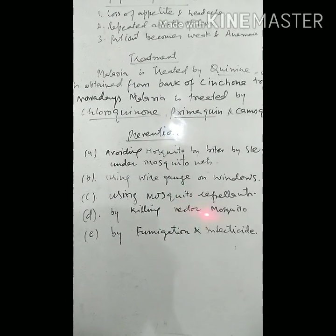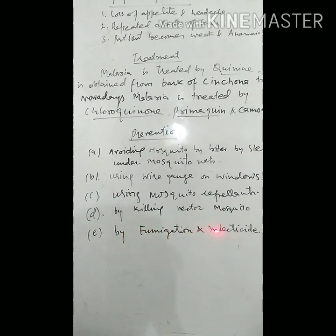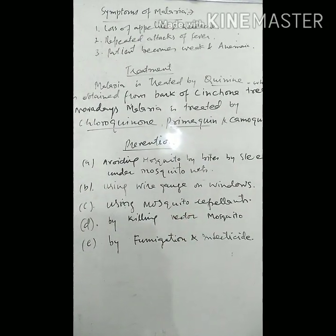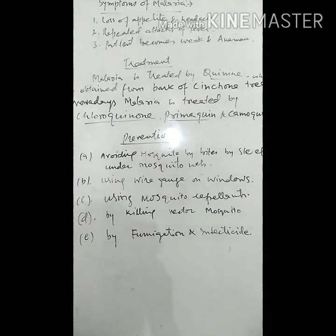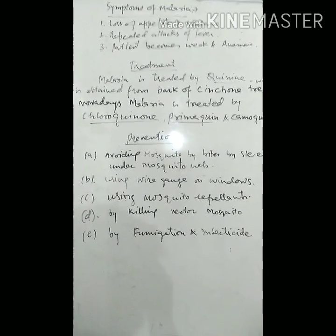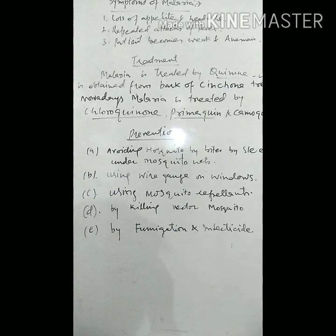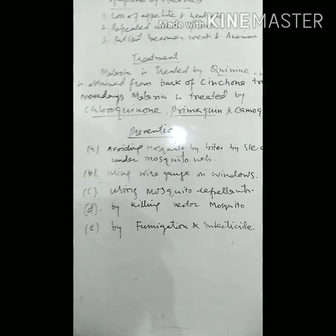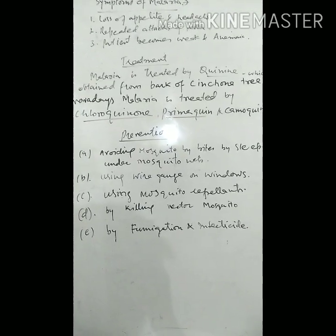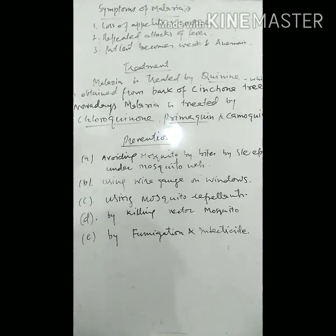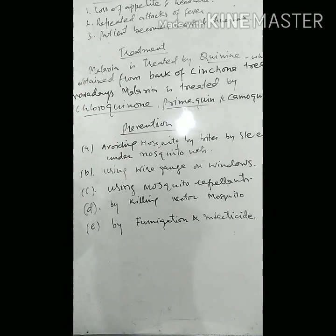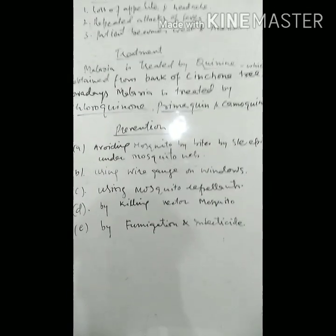Prevention can also be done by fumigation and insecticides. We must fumigate our habitations. Where water ponds or water bodies are found, we should disinfect them by chemicals like DDT, so that the eggs of mosquitoes laid on the water surface can be killed.